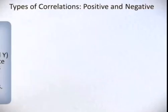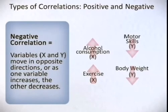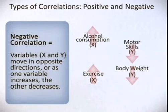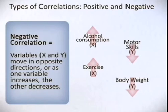In the case of a negative correlation, both variables, X and Y, move in opposite directions to each other. As one variable increases, the other decreases. For example, as alcohol consumption, or X, increases, the subject's motor skills, or Y, decreases.